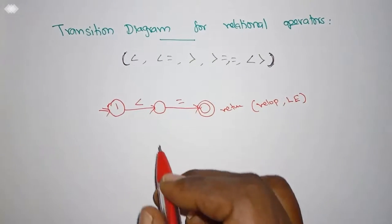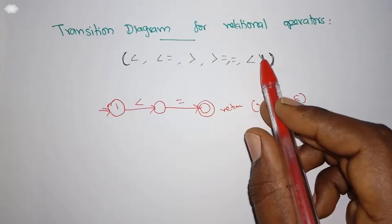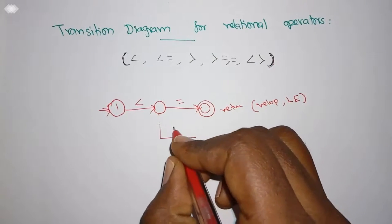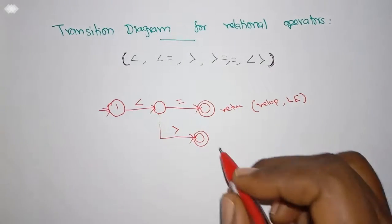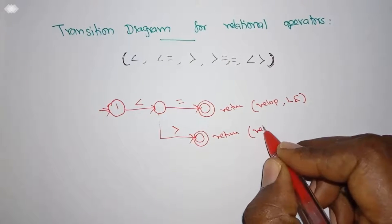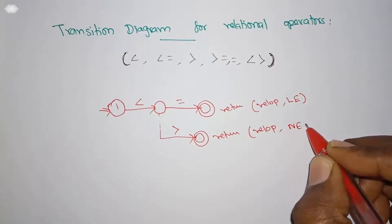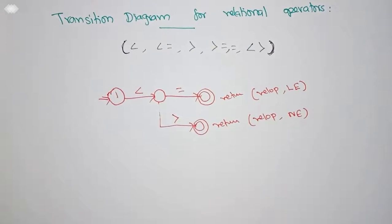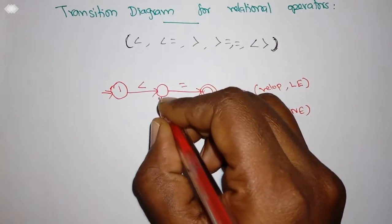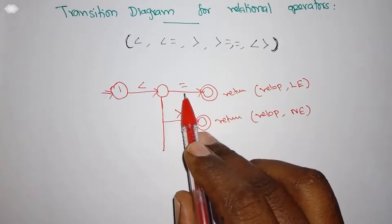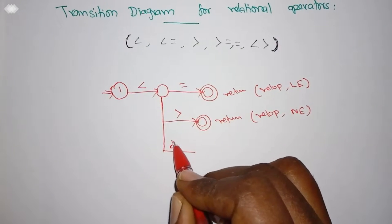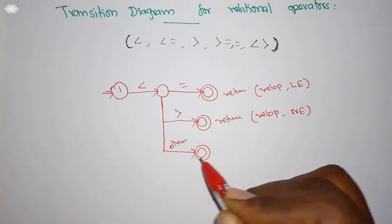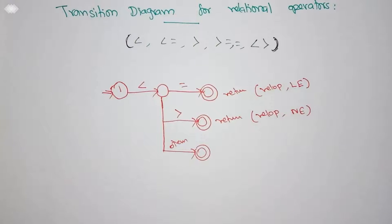Less than followed by an equal-to symbol: we go to a final state and return it as relational operator less-than-equal-to. Similarly, if the less-than symbol is followed by a greater-than symbol, we go to a final state and return it as relational operator not-equal-to. That is what I said — it varies from programming language to programming language; this symbol denotes the not-equal-to operator. If instead of equal-to or greater-than there is some other symbol, then we strictly say it is a strictly less-than symbol.